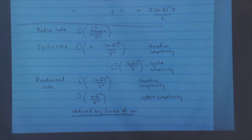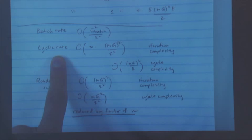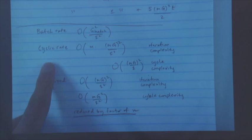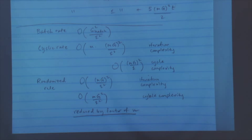With the randomized rule, this is a bound in expectation — on average, the number of cycles needed is Mg²/ε². For the cyclic rule, it's a worst-case bound. So an interesting question is whether this difference is just between what we can prove on average versus worst case, or whether there's actually a practical difference. Practitioners of stochastic gradient descent almost always use the randomized choice of functions.